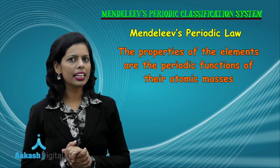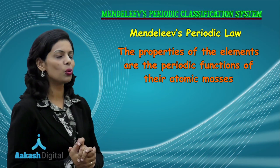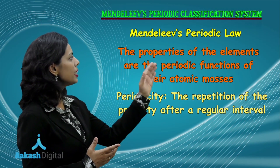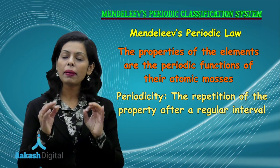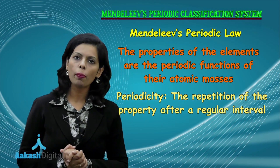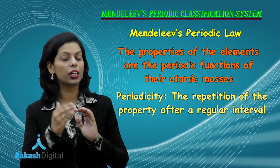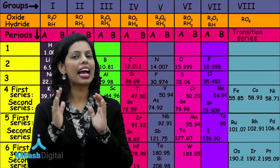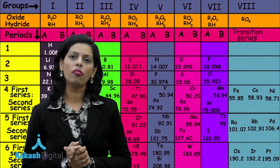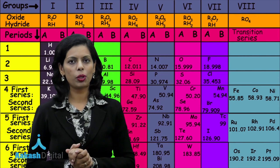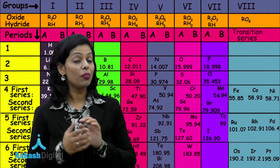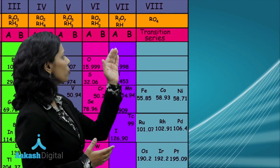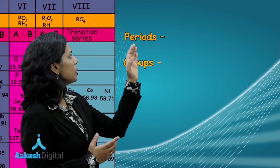What is this periodicity? Periodicity is basically the repetition of the properties after a regular interval. Then I told you the main characteristics of Mendeleev's periodic table. Those characteristics were the periods and the groups.